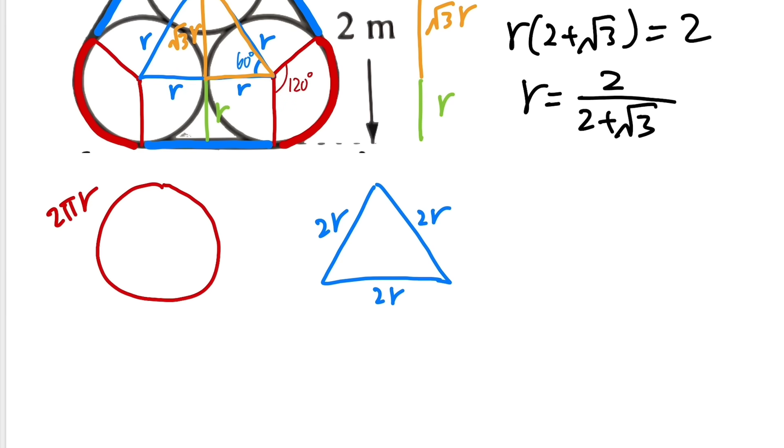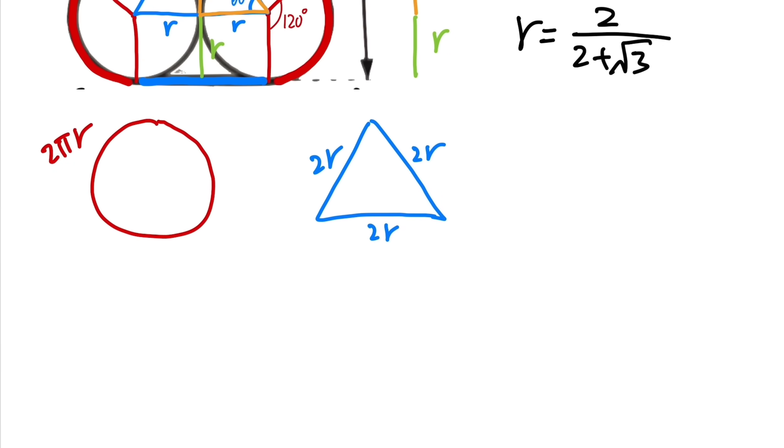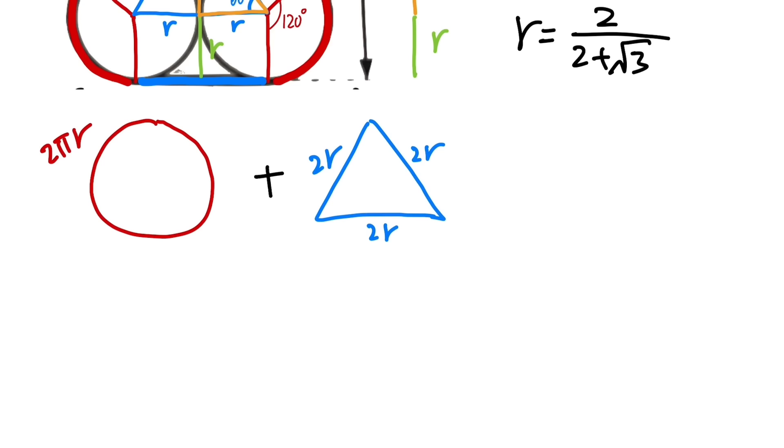I'm just going to use that as my r and then figure out the answer. So ladies and gentlemen, we are going to add them together. For the first length we have to do 2πr, so 2π times 2 over (2 plus √3). Next we are going to add it with 2r plus 2r plus 2r, which is 6r, so 6 times r, which is 2 over (2 plus √3).